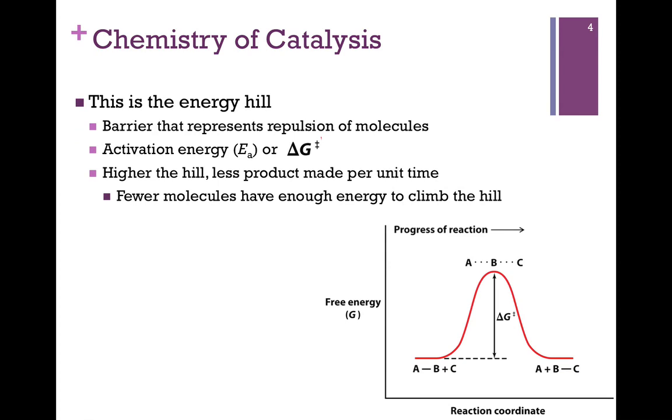This is our energy hill. This is the barrier that represents the repulsion of the forces as these molecules come together. So this is our activation energy, or E sub A. It's also more commonly denoted as the delta G double dagger. Remember that double dagger is our transition state, and the delta G is the Gibbs free energy change.